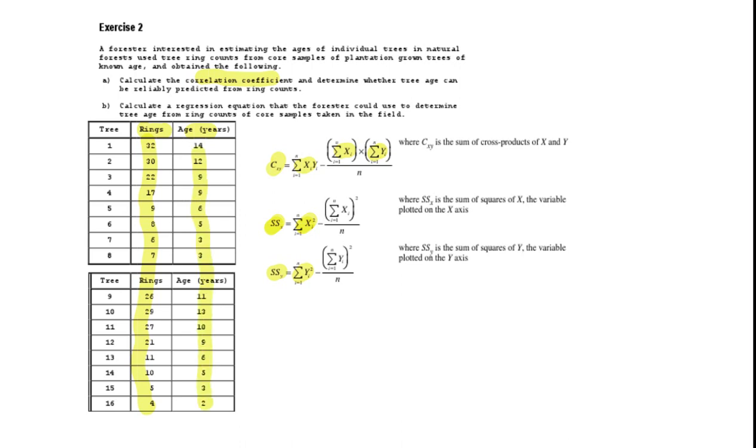And then to calculate sum xy we need to multiply the x times the y and add those values up. So we're going to go 32 times 14, plus 30 times 12, plus 22 times 9, and so on. You can use your calculator to get these values if you wish. And I've worked them out here.